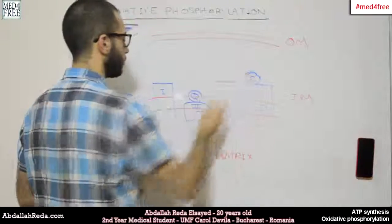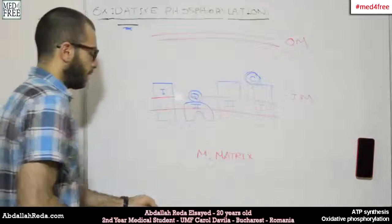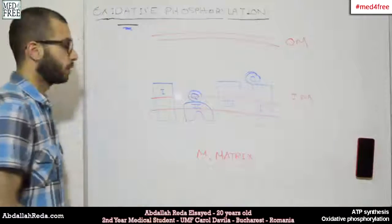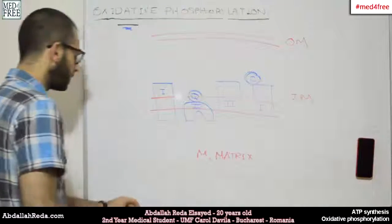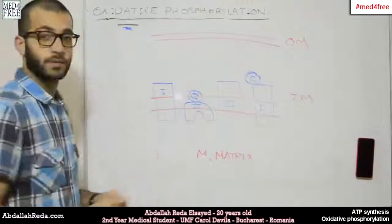Coenzyme Q and cytochrome C. This group of molecules altogether would participate in our oxidative phosphorylation process.